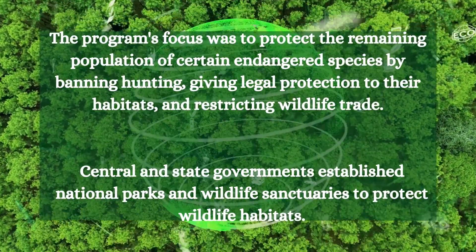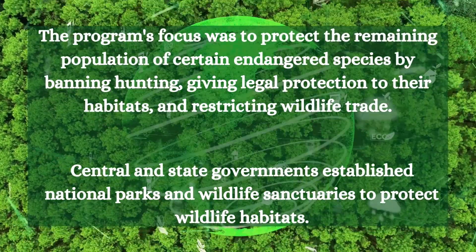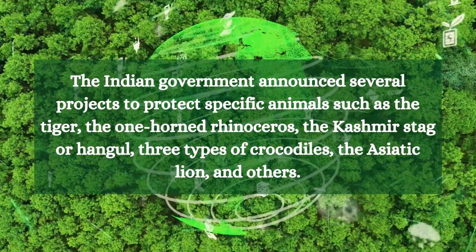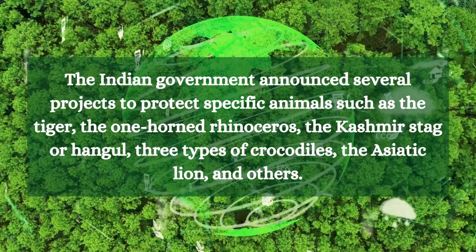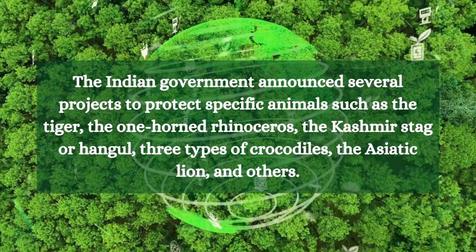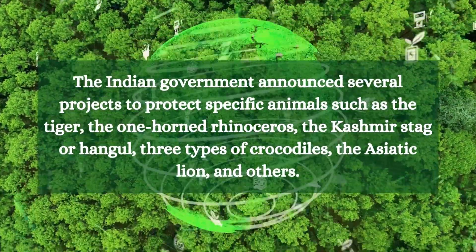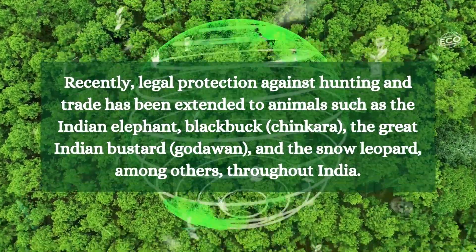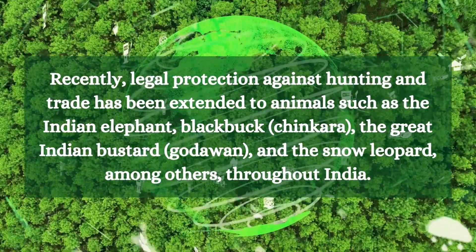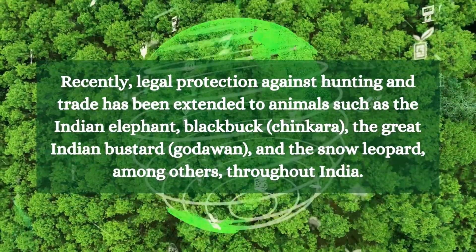Subsequently, the central and many state governments established National Parks and Wildlife Sanctuaries. The central government also announced several projects for protecting gravely threatened species, including the tiger, the one-horned rhinoceros, the Kashmir stag or hangul, and three types of crocodiles — freshwater crocodile, saltwater crocodile, and the gharial — as well as the Asiatic lion. Recently, the Indian elephant, blackbuck or chinkara, the Great Indian Bustard or gundavan, and the snow leopard have also received legal protection against hunting and trade throughout India.